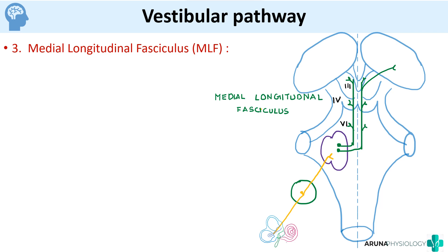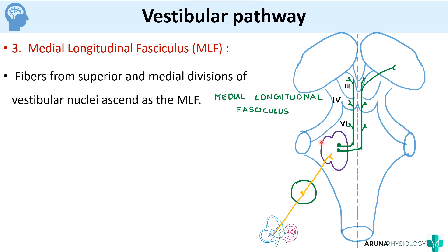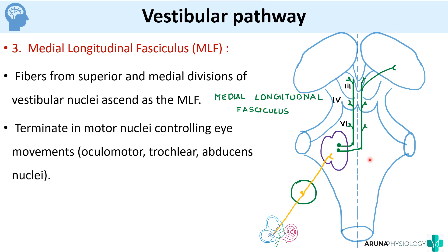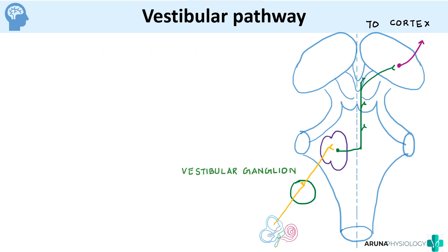The third tract is the medial longitudinal fasciculus. From the vestibular nuclei, the superior and medial divisions ascend as the medial longitudinal fasciculus. They terminate in the motor nuclei that control eye movements — the oculomotor, trochlear, and abducent nuclei — which correspond to cranial nerves three, four, and six.